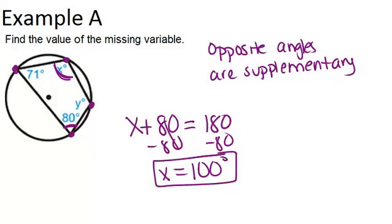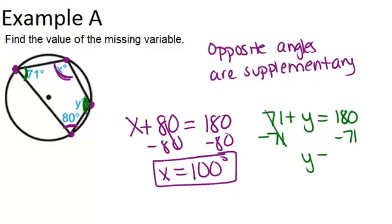Similarly, our 71 degree angle and y are supplementary. So 71 plus y equals 180 degrees. If you minus 71, you figure out that y has to be 109 degrees. And you could always double check that 71 plus 80 plus 100 plus 109 equals 360, which is the sum of the angles in a quadrilateral.